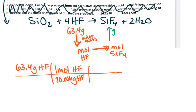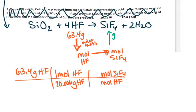And then I'm going to put my moles of HF on the bottom and convert to moles of SiF4 on the top. When I'm doing a mole-to-mole conversion, I use coefficients from my balanced chemical equation. So my coefficient for HF is 4, and my coefficient for SiF4 is 1.